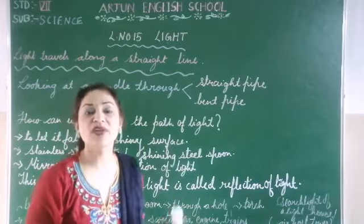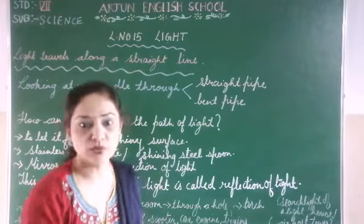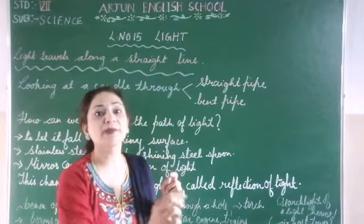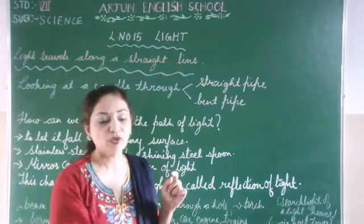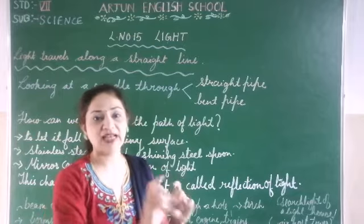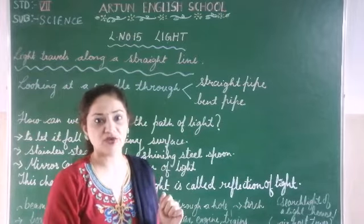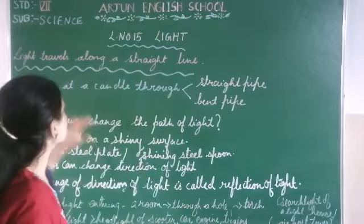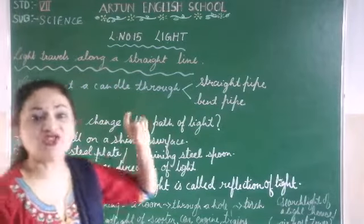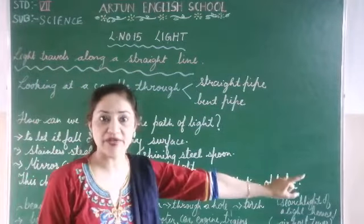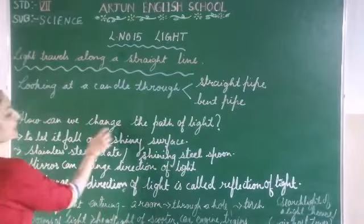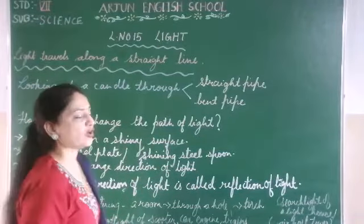This is a very simple experiment which we can do. You can use a straight pipe and you can use a bent pipe. Through a straight pipe we can see a candle, but through a bent pipe we won't be able to see it. We can only see light along a straight line. But how can we change the direction of light?